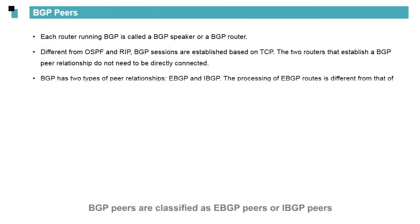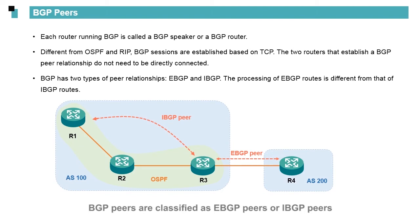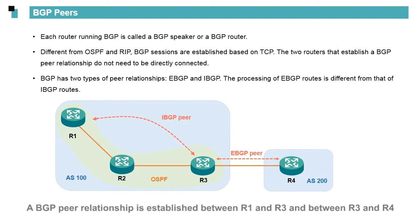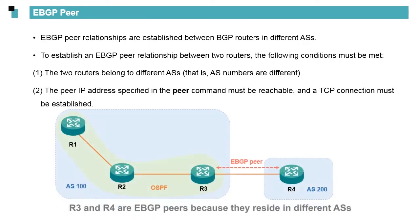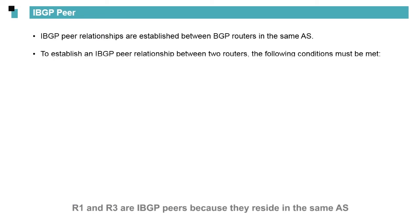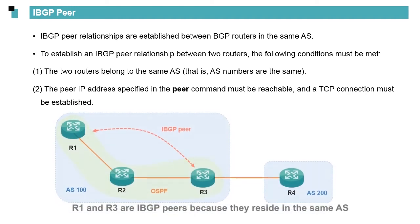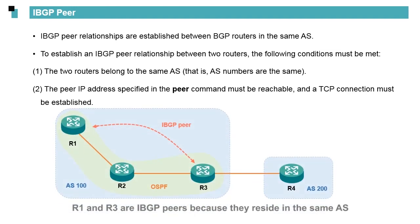BGP peers are classified as EBGP peers or IBGP peers. In the figure, R1, R2, and R3 are in AS100, and R4 is in AS200. A BGP peer relationship is established between R1 and R3 and between R3 and R4. R3 and R4 are EBGP peers because they reside in different ASs. R1 and R3 are IBGP peers because they reside in the same AS.